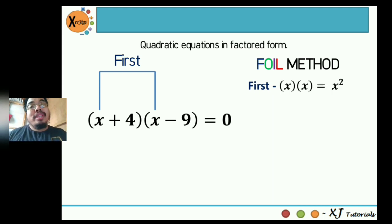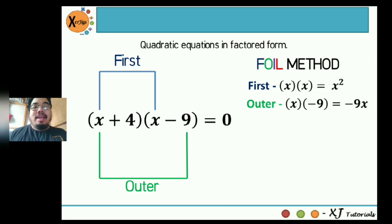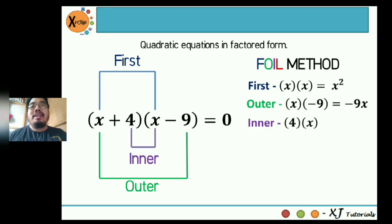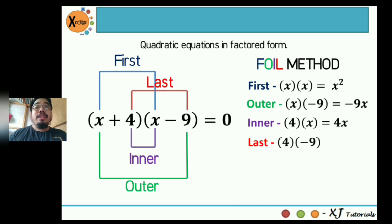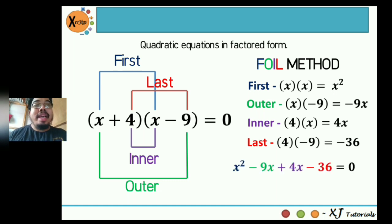For Outer, those are the outer terms of the two factors: x and negative 9. So negative 9 multiplied by x is negative 9x. For Inner, those are the inner terms: 4 and x. The product of 4 and x is positive 4x. For Last, the last terms of the two factors are 4 and negative 9 — the product is negative 36. Once you get all the products of the FOIL terms, you put all these terms into a new equation: x squared minus 9x plus 4x minus 36 equals zero. Since there are similar terms, you combine negative 9x and positive 4x to get negative 5x.